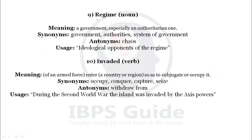Our next word is 'regime.' Regime is a noun meaning a government, especially an authoritarian one — a government which holds authority and power. An authoritarian government is called a regime. Synonyms: government, authorities, system of government. Antonyms: chaos, anarchism — where there is no system, no authority, no government.